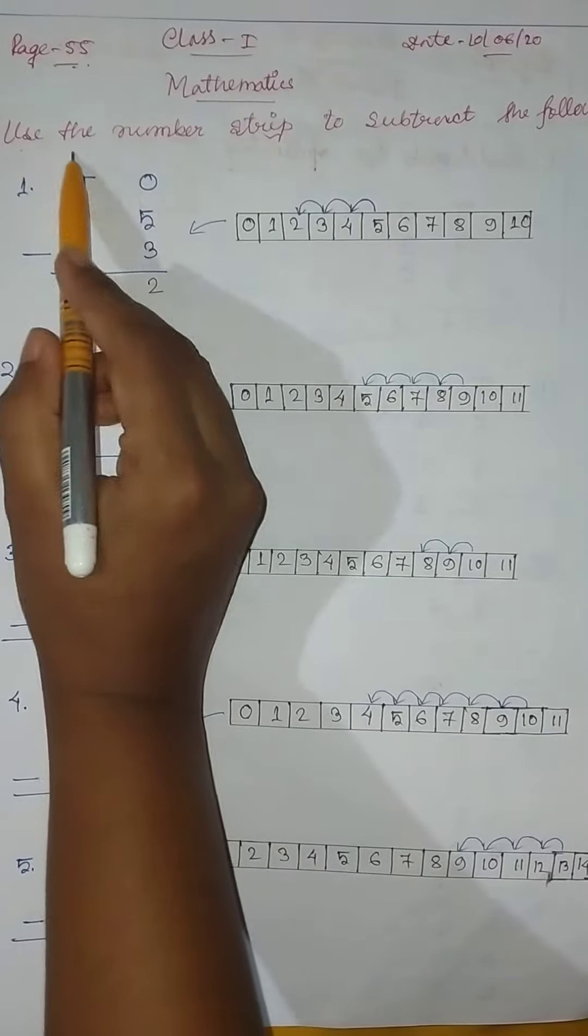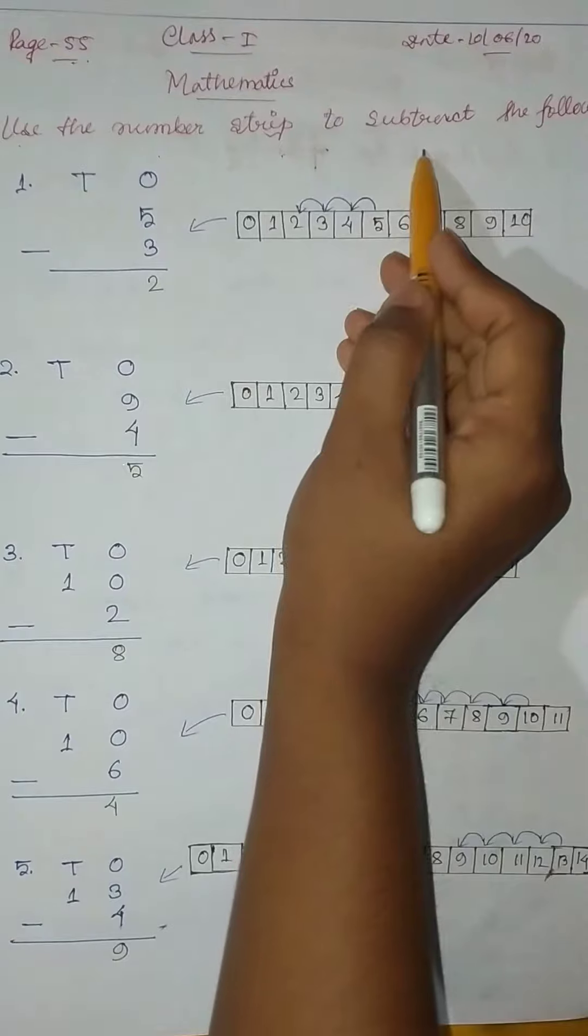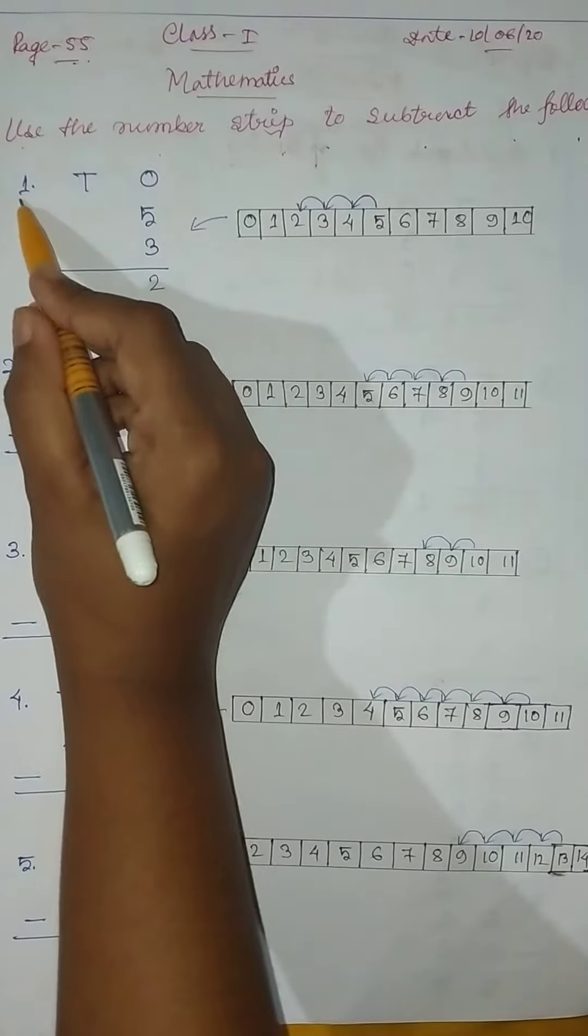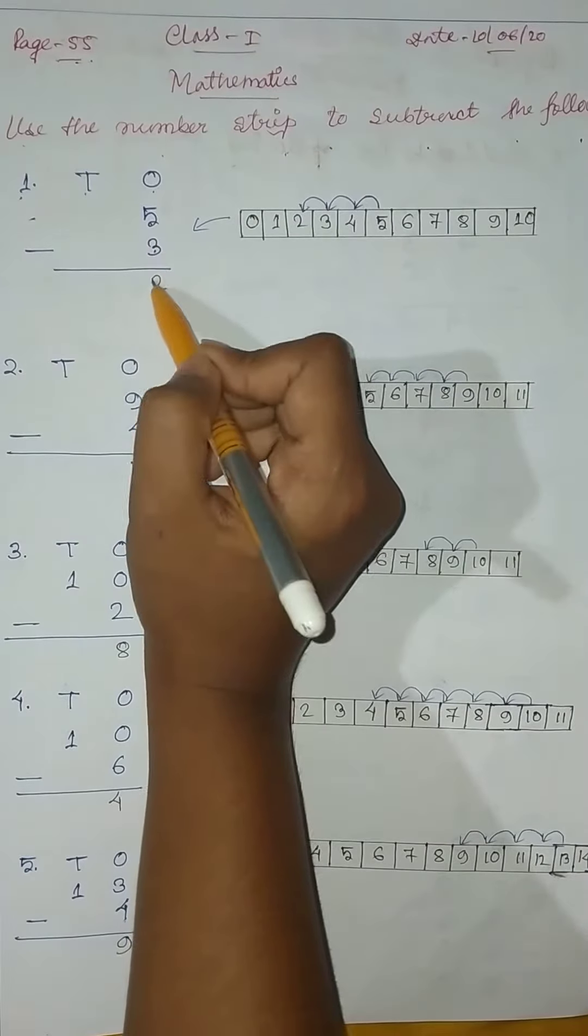So today, use the number strip to subtract the following. Firstly, question number 1: 5 minus 3.